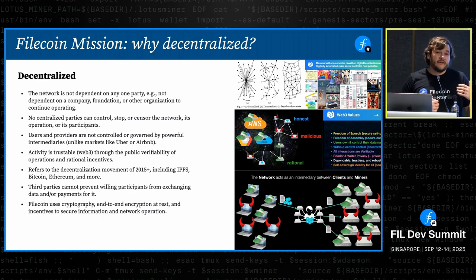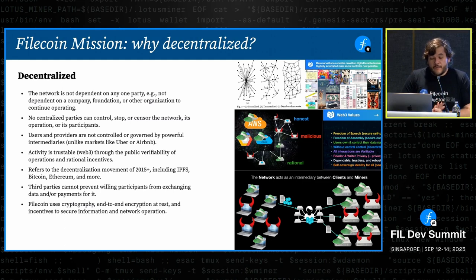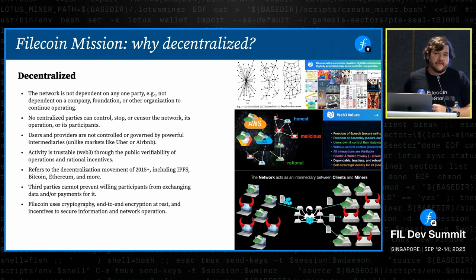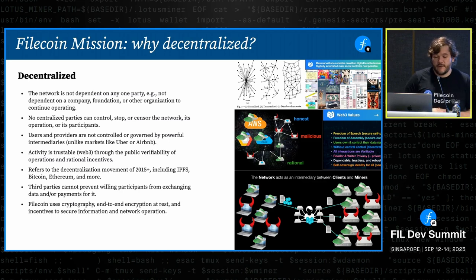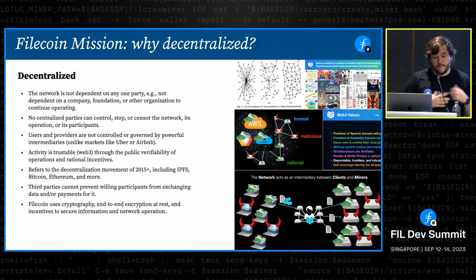That doesn't mean you should store stuff you don't want to store — you should decide what you want to store and distribute. We also want to make sure that users and providers are not co-opted by really powerful intermediaries. We want strong, secure networks using strong cryptographic primitives to make sure those incentives are robust — cryptographic proofs, verifiability, and so on.